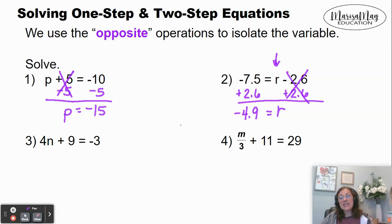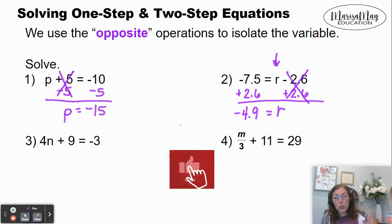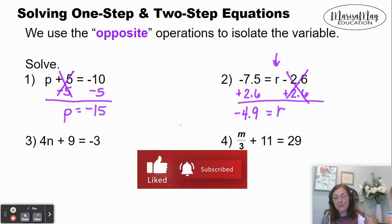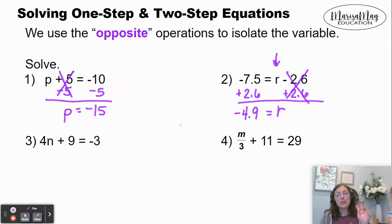These two examples, one and two, are called one-step equations. Why? Because we had to do one thing to both sides of the equation in order to get the variable by itself. Now look at number three here. When you ask yourself the question — what's happening to the variable — there are two things that are happening to the variable.